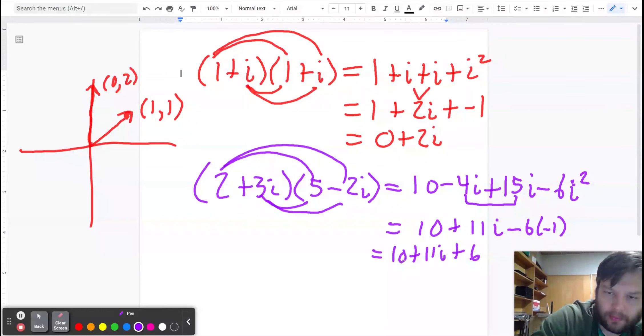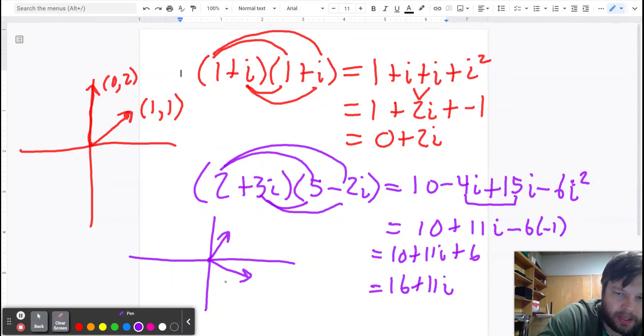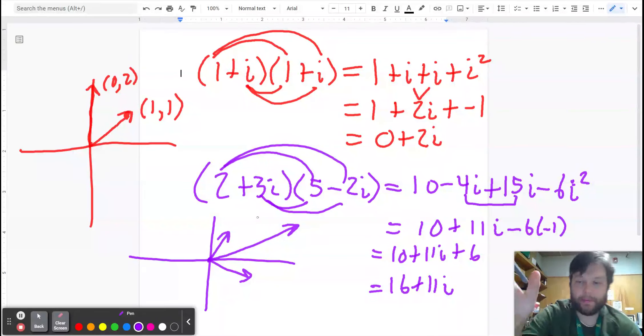So here on this picture, two plus three i, five minus two i. Multiply those together, you get 16 plus 11 i like that. So I want you to think about what's going on here with the angle, what's going on here with the length.